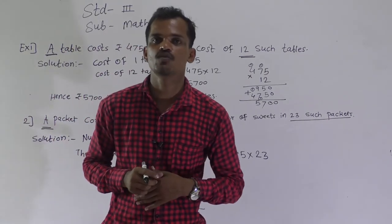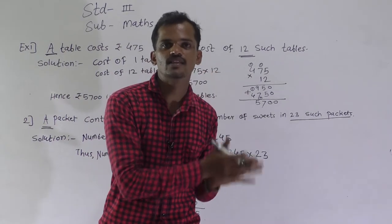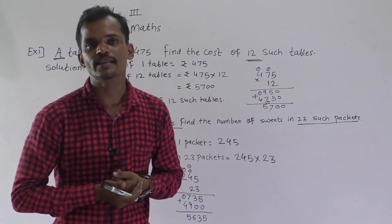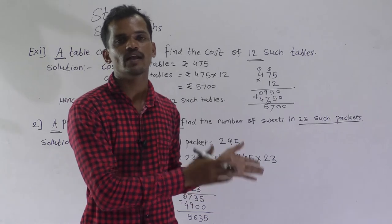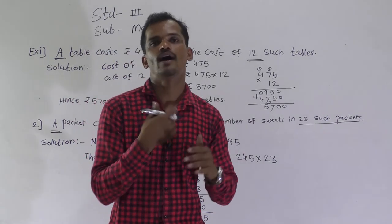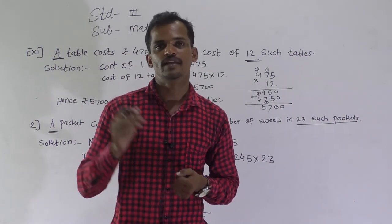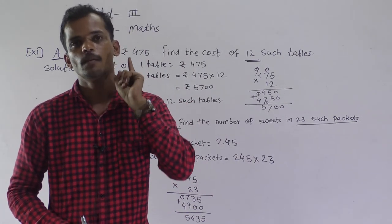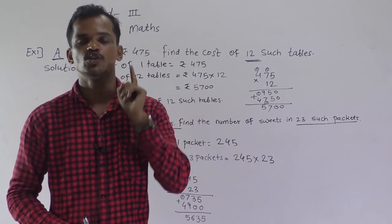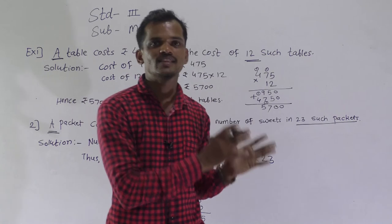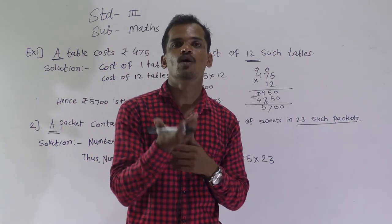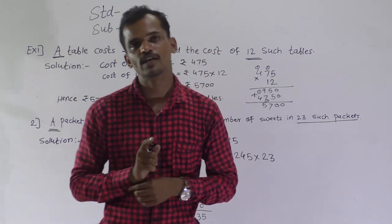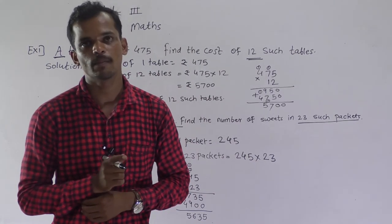In a multiplication word problem, cost of one thing is given and they ask the cost of many things, or one thing is given and they ask about many things. So, one to many — you have to do the multiplication. Remember: if one thing is given and they ask about many things, then you have to do the multiplication operation.